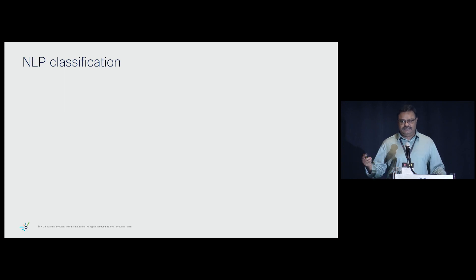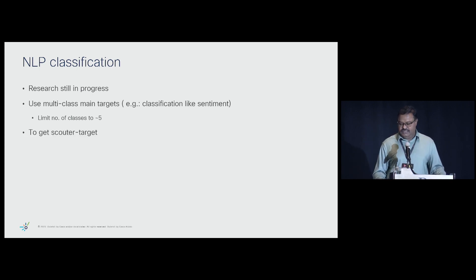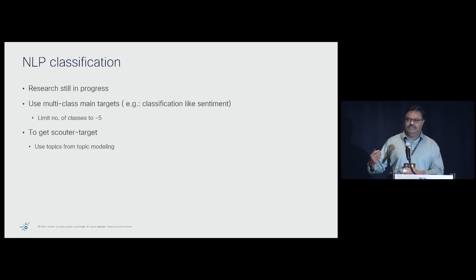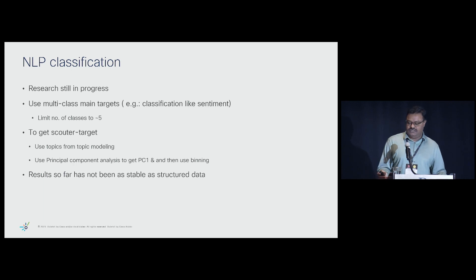Then comes NLP classification. Research is still in progress, but approaches are similar to computer vision. Multi-class main targets work best — sentiment classification works well. Limit the number of classes to around five. For the Scouter target, topics from topic modeling seem to be a good representation: get five or six topics, or create a feature list of topics. For small closed-domain text, four or five topics work well as the Scouter. You can also take embeddings and do principal component analysis, though that is expensive. Results so far have not been as stable as structured data.